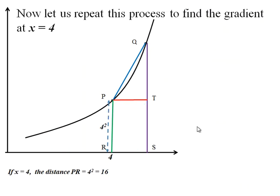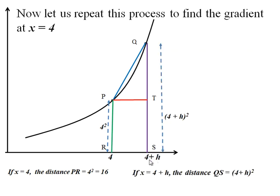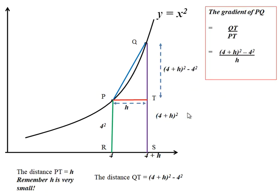Now, we'll repeat the process at X equals 4. So, this is X equals 4. The height of the curve there is 4 squared, 16. Move along a distance H. So, the height of this is 4 plus H squared. So, that height is 4 plus H squared minus 4 squared over H. And the gradient of PQ is QT over PT, which is this again.